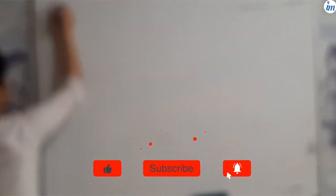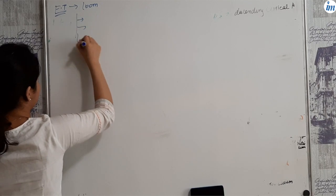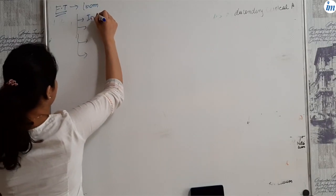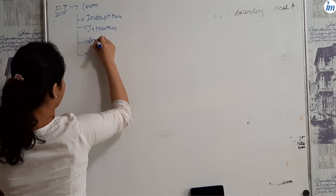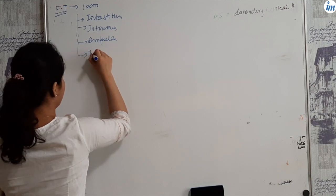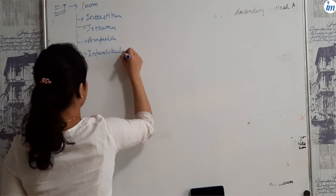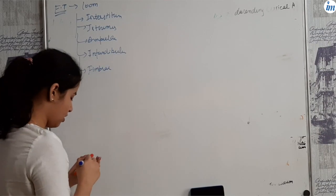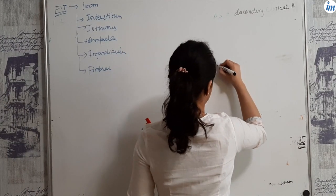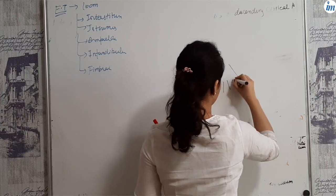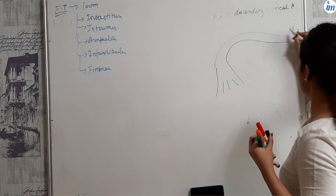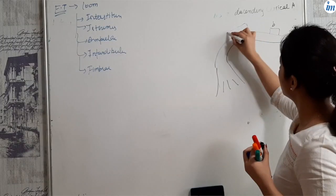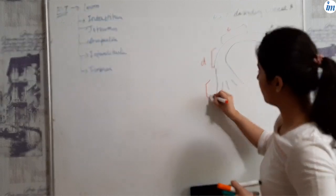Now the fallopian tube. Fallopian tube is 10 cm and it is having five parts. First is interstitium, isthmus, ampulla, then infundibulum, and last one is fimbriae.